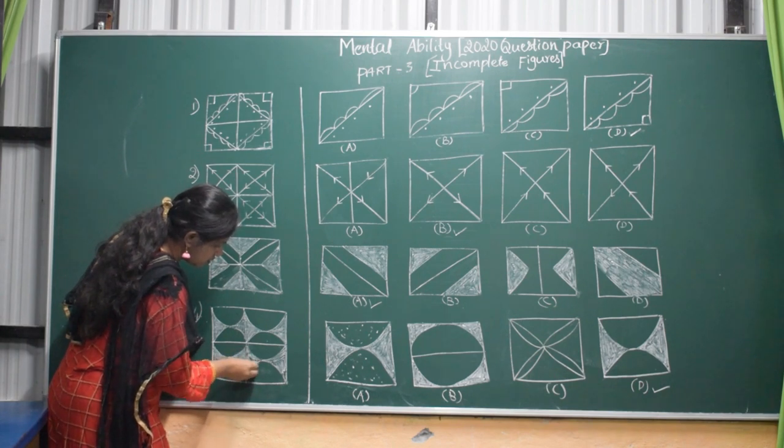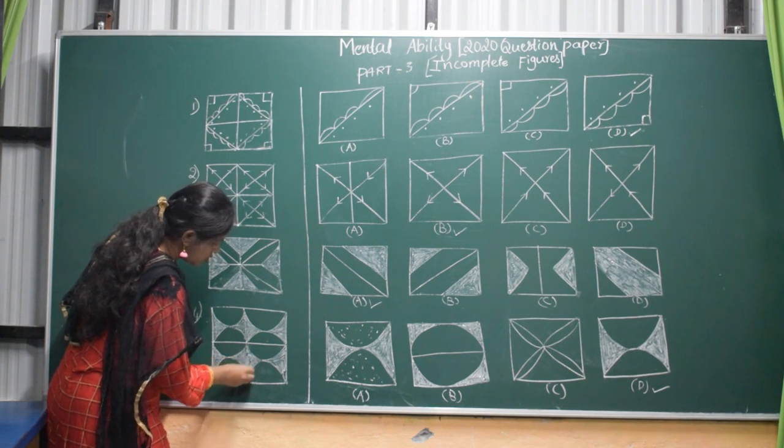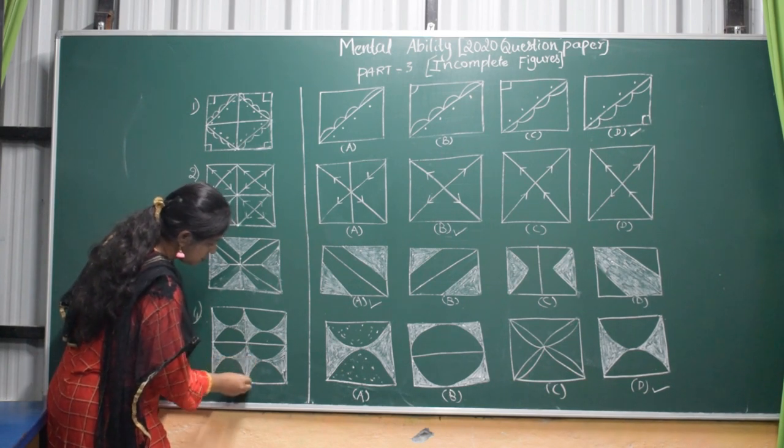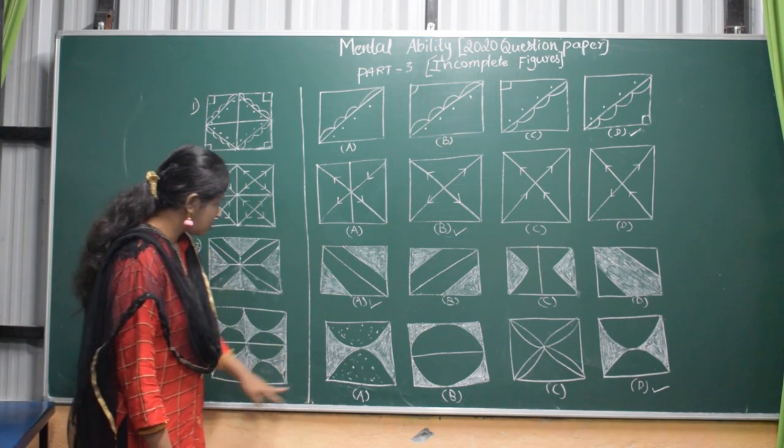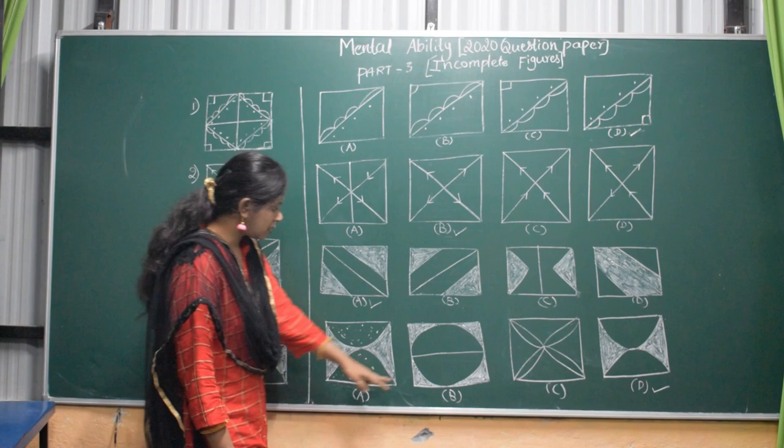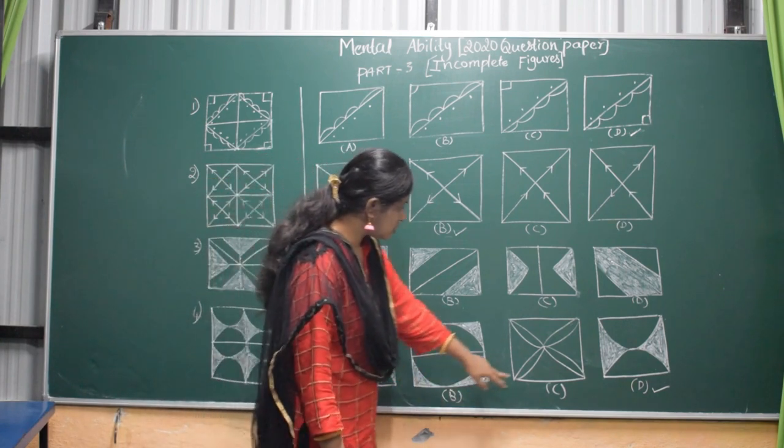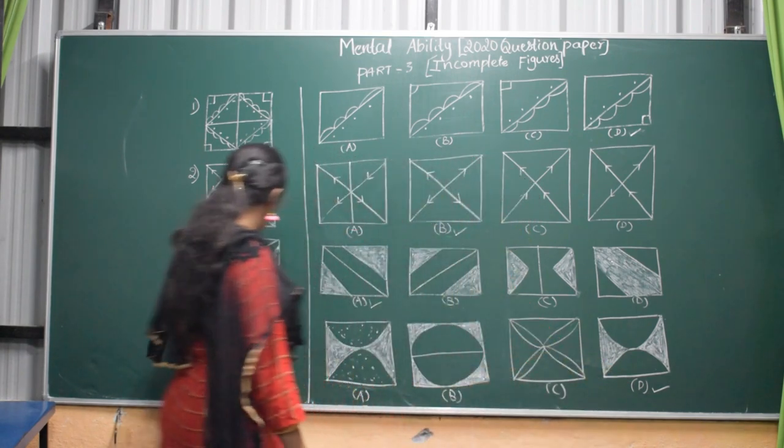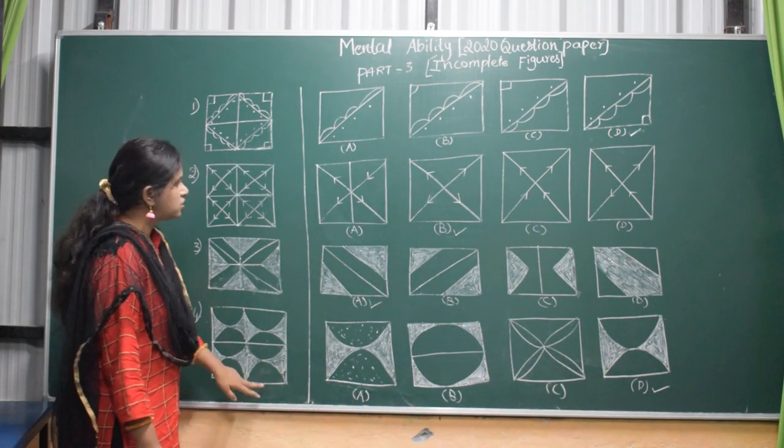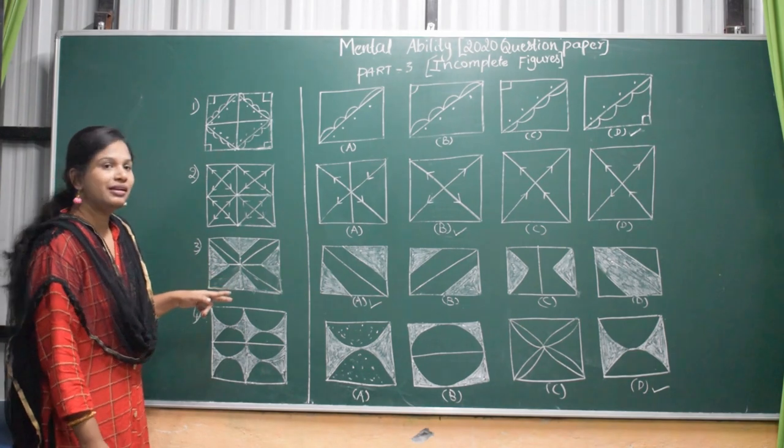Then you observe which one is suitable for this incomplete figure. We will draw, we will complete it. So 1st one is not suitable for this. It is dotted. And 2nd one is circle. 3rd one also has cows there, 3rd one is also not suitable. 4th one is exactly matching to this figure. So like this way you find easily.